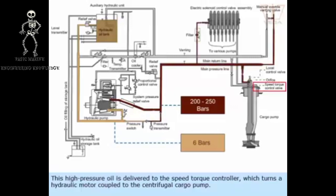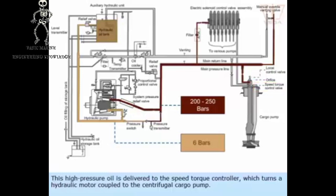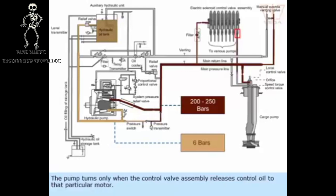This high-pressure oil is delivered to the speed torque controller, which turns a hydraulic motor coupled to a centrifugal cargo pump. The pump turns only when the control valve assembly releases control oil to that particular motor.